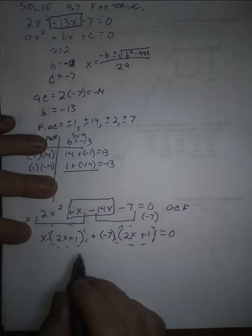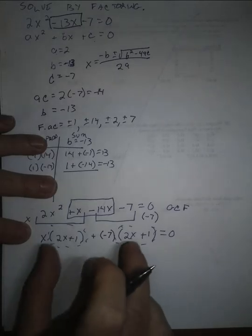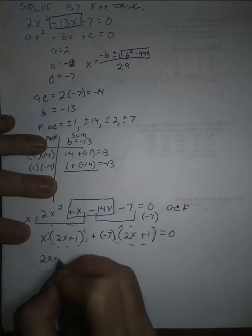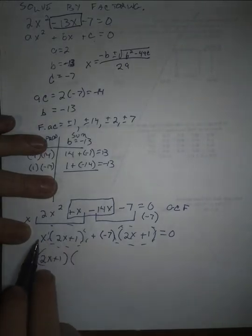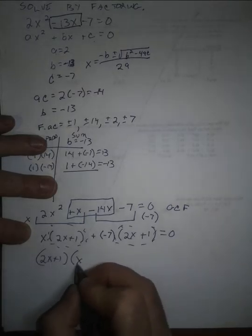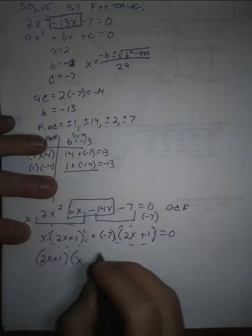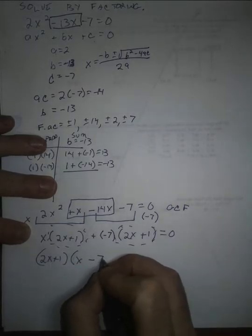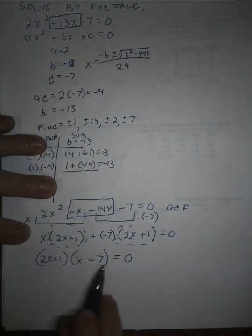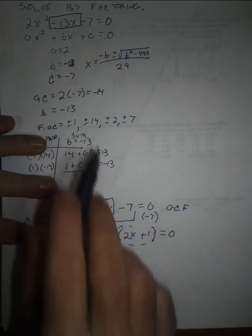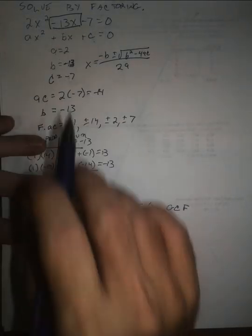So this, I'm going to factor out the 2x plus 1, and that thing was multiplied by x plus negative 7. I'll write that as minus 7. And now I've come up with the original pair of binomials that made my original quadratic.